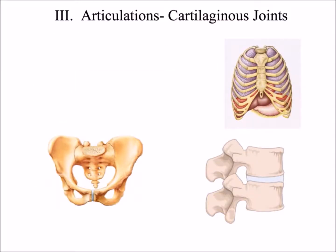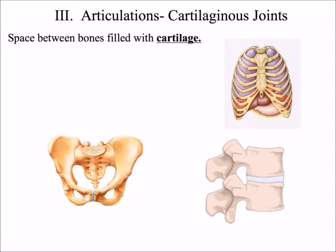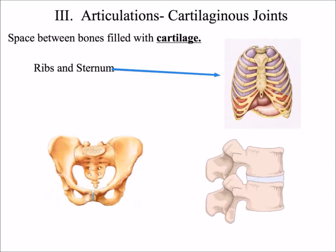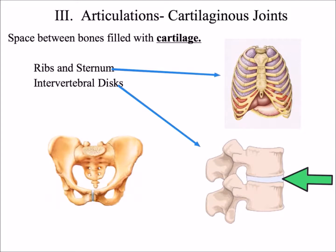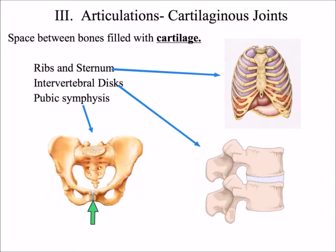The second structural classification is the cartilaginous joint, where the space between the bones is filled with cartilage. Examples include the sternal-costal joint, where hyaline cartilage is found between the sternum and the ribs; the joint between two vertebrae, where an intervertebral disc or fibrocartilage pad is found; and the pubic symphysis, where a fibrocartilage pad is found between the two pubic bones.